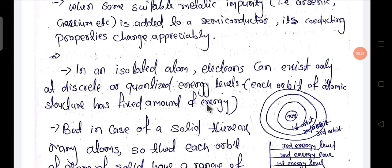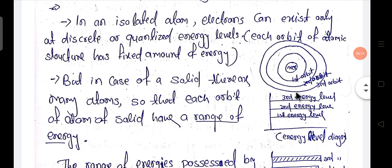When we consider only one atom, the first orbit has one fixed energy level, the second orbit has one fixed energy level, and the third orbit has one fixed energy level. This energy level is represented in the energy level diagram. The first energy level corresponds to the first orbit, the second energy level to the second orbit, and the third energy level to the third orbit. Each orbit possesses a fixed amount of energy.